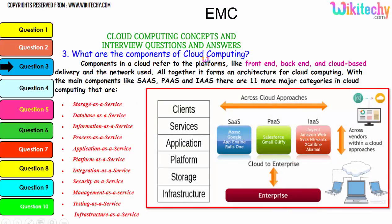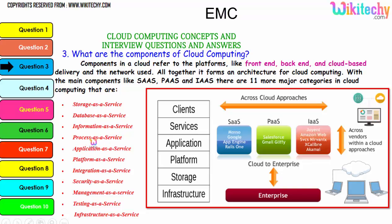Now let's talk about the components of cloud computing. Components in a cloud refer to platforms like front-end, back-end, cloud-based delivery, and the network used - all together forming the cloud computing architecture. The main components are Software as a Service, Platform as a Service, and Infrastructure as a Service. There are 11 major categories: storage as a service, database as a service, information as a service, process as a service, application platform, integration, security, management, testing, and infrastructure.